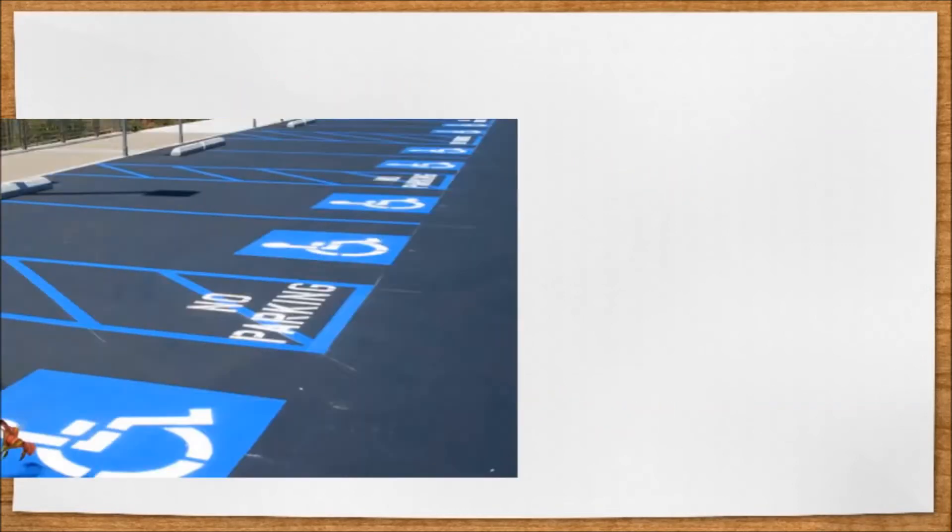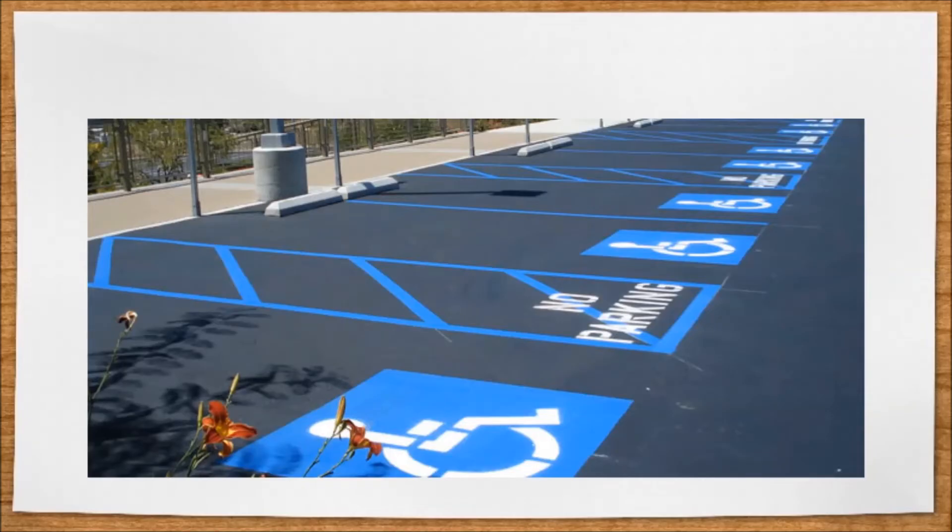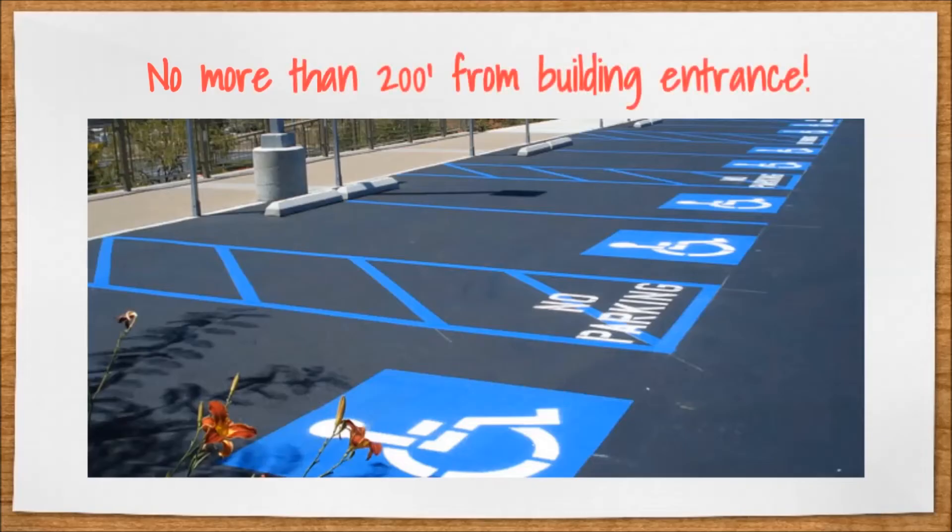Every parking lot must have at least one handicapped parking space. The number required depends on the size of the parking lot and the type of building the lot is serving. These spaces should be no more than 200 feet from the building entrance.